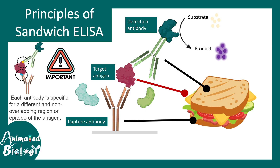It is important to note that the capture antibody and the detection antibody both detect the same protein but different epitopes on the protein. Epitopes are small portions of any protein that are detected by antibodies. The first and foremost criteria for sandwich ELISA is non-overlapping epitopes, and mostly monoclonal antibodies are used for these kinds of assays.